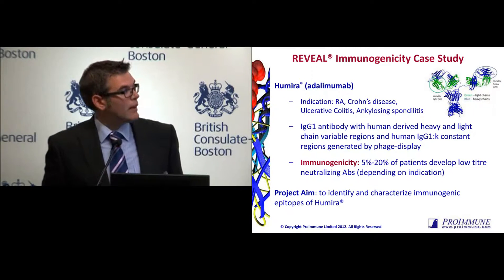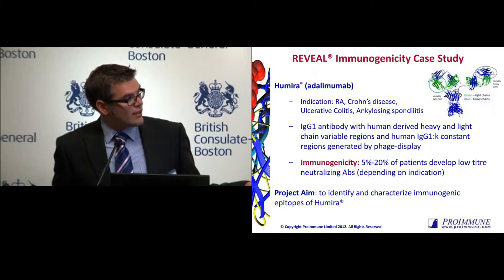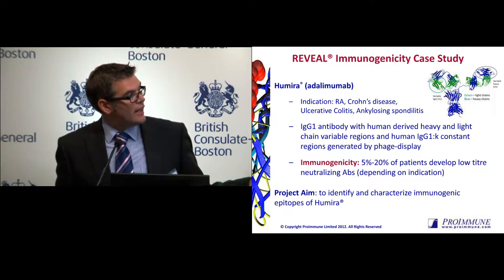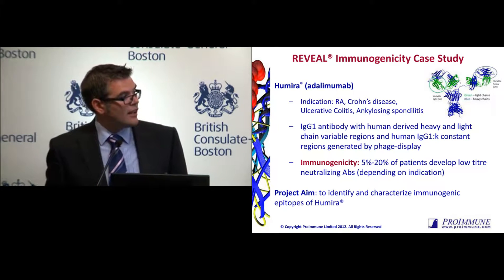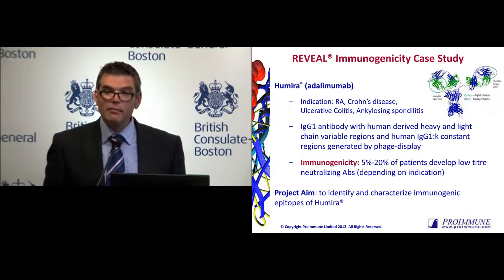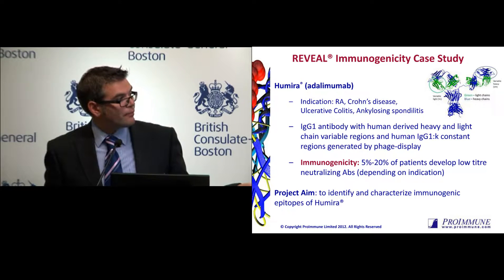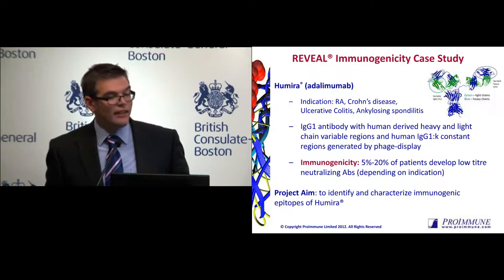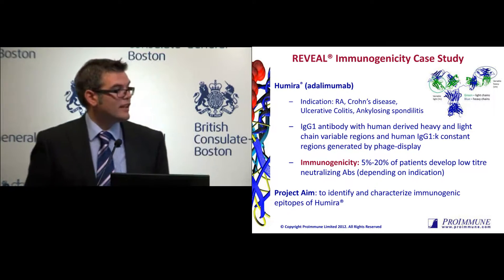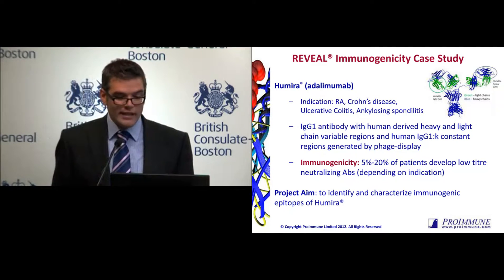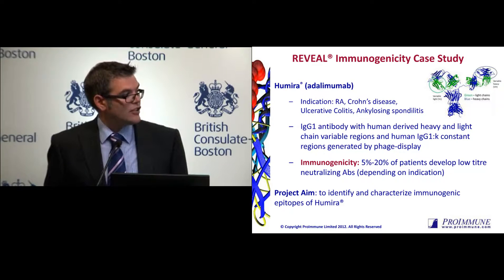The case study I'm going to be talking about is Humira — Adalimumab — which doesn't really need much introduction. It's been spoken about already quite a bit this morning. Used in a number of different indications of autoimmune disease, including rheumatoid arthritis. It's a fully human technology generated by phage display — an IgG1 antibody. With respect to immunogenicity, between 5 and 20%, or as we've heard even up to 35%, of patients develop neutralizing antibodies, again depending on the indication, although that doesn't necessarily correlate into clinical outcome.